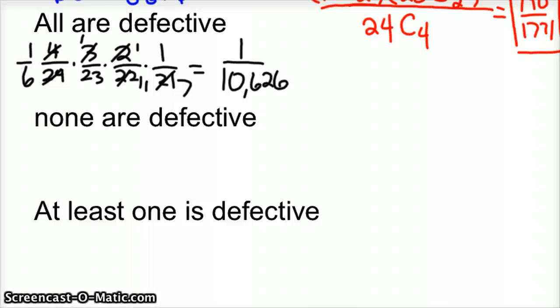So 1 out of 10,626. Now none are defective, well that'd just be the opposite. There's 20 good ones out of 24 total. Then there would be 19 out of 23, then 18 out of 22, then 17 out of 21. And so you simplify this. I'm going to kind of rush through this a little bit.